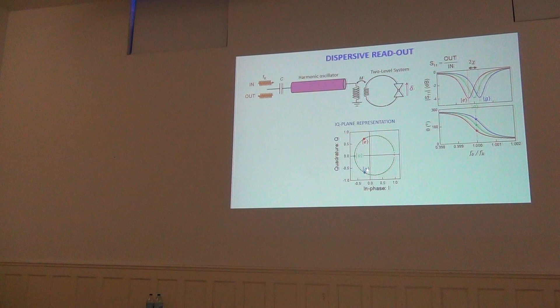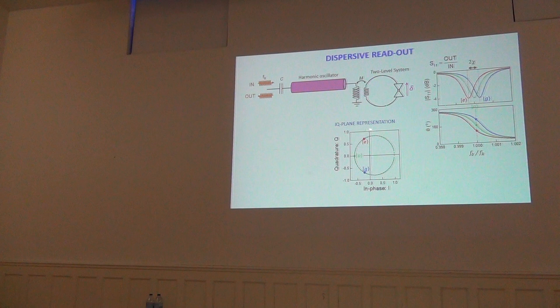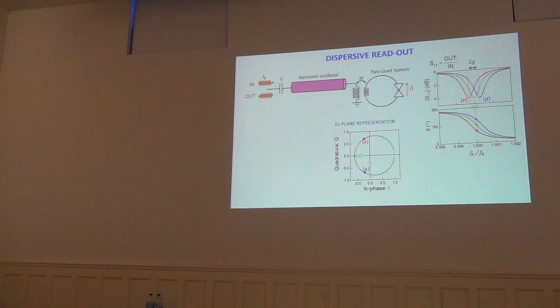In practice, there are fluctuations and experimental noise, so each state appears as a cloud of points. The important design parameter is the coupling G — it must be large enough to distinguish between the three clouds corresponding to ground state, excited state, and odd state.